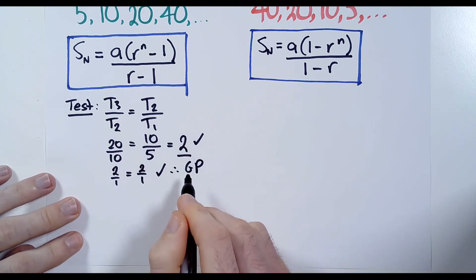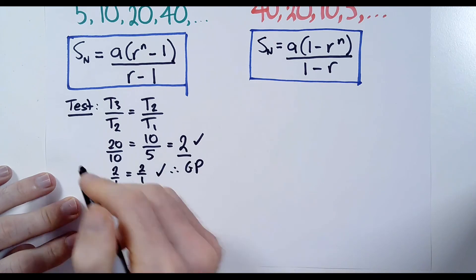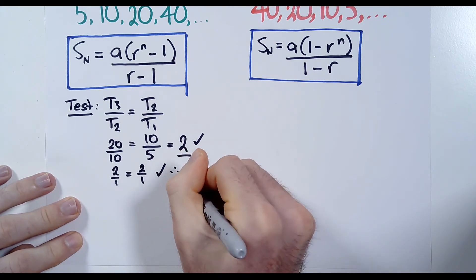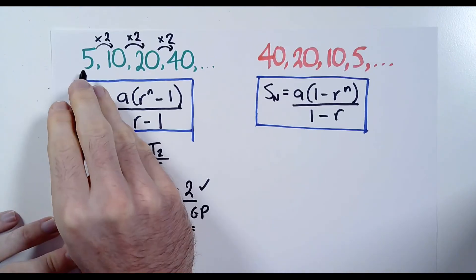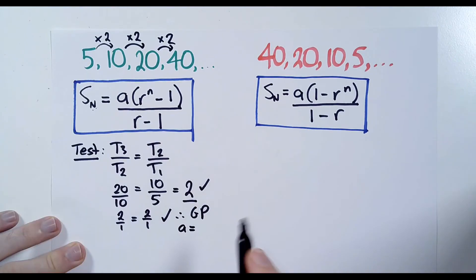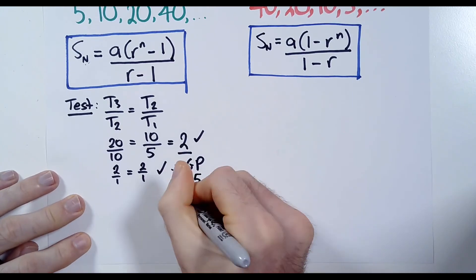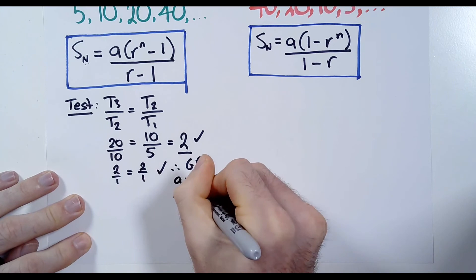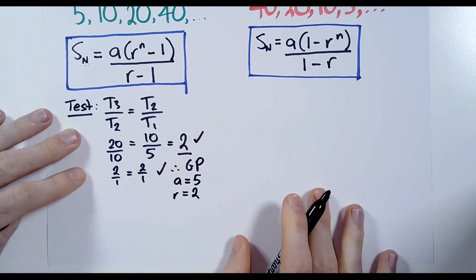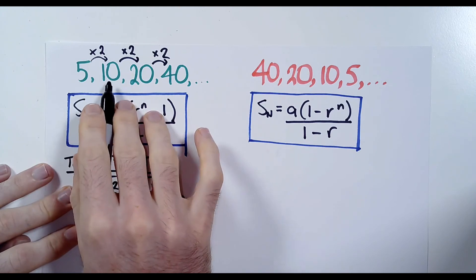Once we establish that it's a GP, you always want to state what the first term is — that is A. We call A the first term; think about it as the first letter of the alphabet, so it's the first term. In this case, A is 5 — always look at the leftmost number. So A equals 5, and R, which is the common ratio, is 2, as we've just proven, because that is the number you have to multiply a term by to get to the term to its right.